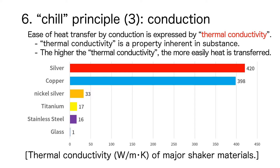The ease of heat transfer in a solid is expressed by thermal conductivity. Thermal conductivity is an intrinsic property of a material, meaning it is determined solely by the material of the shaker and does not vary with shaking technique or method. The greater the value of thermal conductivity, the more easily heat is transferred. The slide shows a bar graph of the thermal conductivity of the main materials used in shakers, confirming that thermal conductivity varies greatly depending on the material.